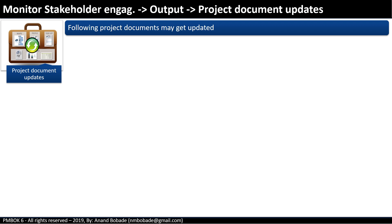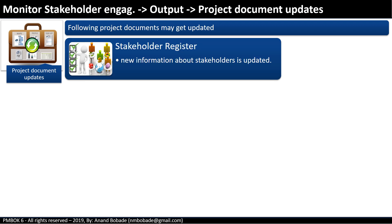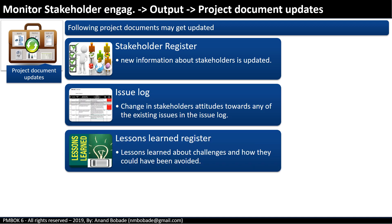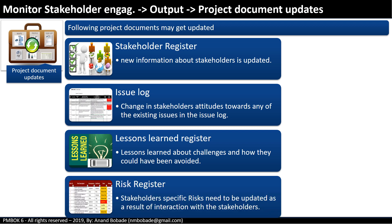Under project document updates, the main document that needs to be updated is the stakeholder register, reflecting new information about stakeholders from monitoring. If any stakeholder's attitude has changed toward existing issues, the issue log may be updated. The lessons learned register should include lessons about challenges and how they could have been avoided, as well as positive lessons from successful stakeholder management approaches. The risk register also needs to be updated with stakeholder-specific risks based on interactions.